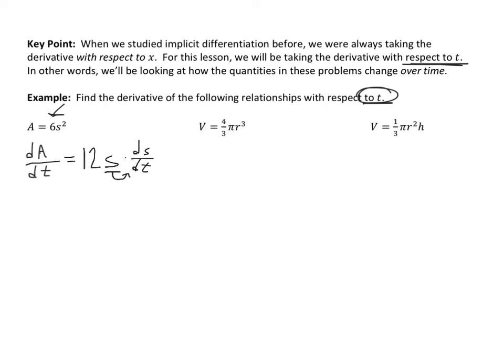So that's mechanically what the derivative of that relationship is with respect to t. The second example should be fairly straightforward — very similar to the previous one. The third one is more complicated, so I'd encourage you to work on taking its derivative with respect to t and then check your work.